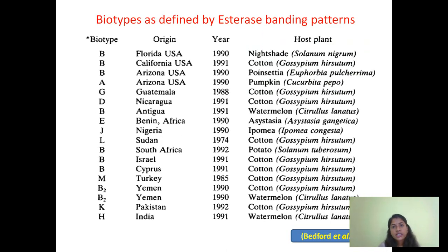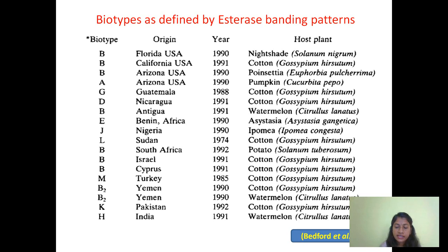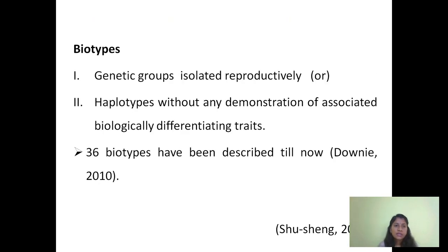These are the biotypes defined as per esterase banding patterns. We can see that even before the year 1991, many biotypes had been found — the biotype term was finalized in 1991 but many biotypes were described before that. Biotypes can be defined in two ways: as genetic groups that are reproductively isolated, or as haplotypes without any biological differentiating traits — meaning haplotypes that do not differ in host plant range or physiology. Totally, 36 biotypes have been described.